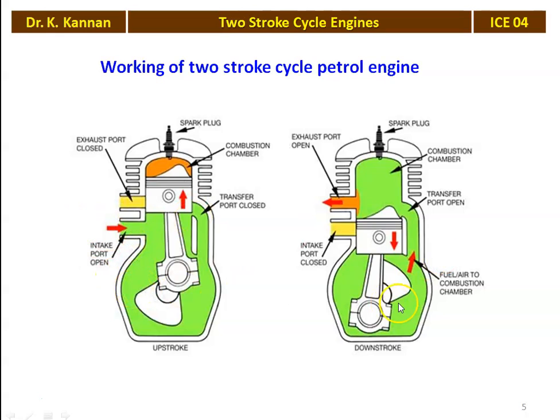In the case of a 2-stroke cycle engine, the removal of exhaust gases is done by the fresh air-fuel mixture entering the engine cylinder. But in the 4-stroke cycle engine, there is a separate stroke for the scavenging process — the exhaust stroke. In the 2-stroke cycle petrol engine, all operations — suction, compression, combustion, expansion, and exhaust — are completed in just two strokes: the upward stroke and the downward stroke.